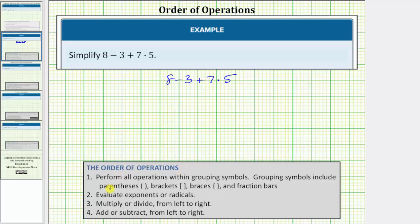For step one, we perform all operations within grouping symbols first. Grouping symbols include parentheses, brackets, braces, and fraction bars. Notice how this step does not apply because we don't have any grouping symbols in the expression. So we move to step two.